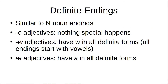The definite endings — which are the ones you use in those cases I talked about, like after the word 'the,' after possessives, when you're saying 'you crazy man' — those endings are similar to the n-noun endings and are kind of variant adjectives. E-adjectives: nothing special happens, you just put the endings on and get rid of the e — they just look normal. W-adjectives just have the w in all forms because all the endings start with vowels. And our a-adjectives have a in all the definite forms, so it's pretty easy — there's no variance.